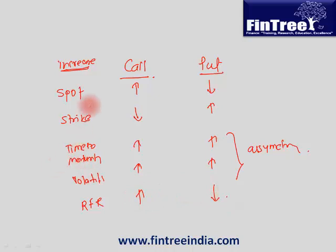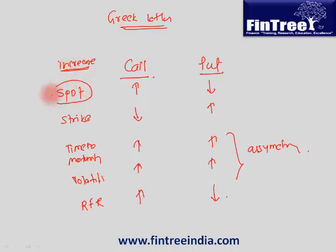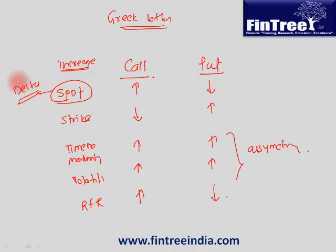The same relationships in the option world are denoted with certain Greek letters. The relationship between spot price and the value of an option is denoted by a Greek letter called delta. When spot price changes, by what amount the value of the call option will increase — that relationship is given by delta. In mathematical terms, delta is the first derivative of this relationship. The second derivative is called gamma.